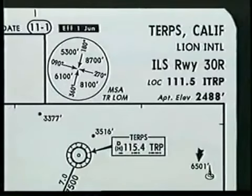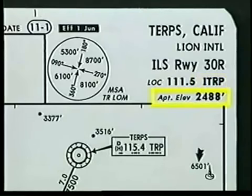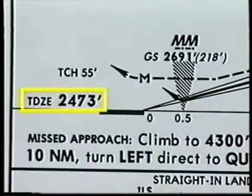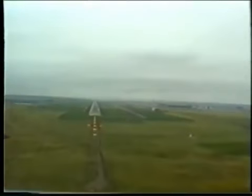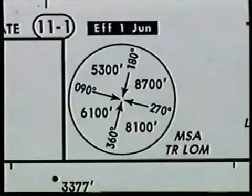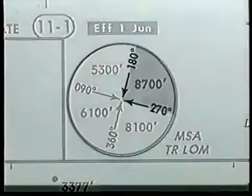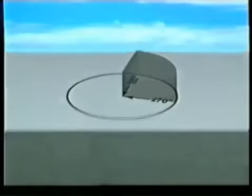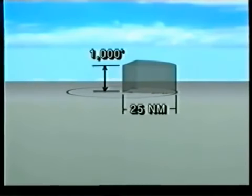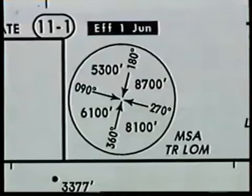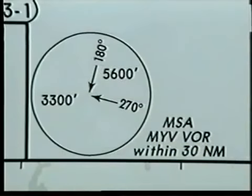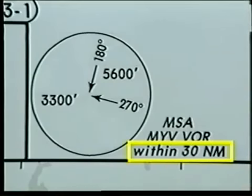This section of the chart also includes the procedure's primary navigation aid and frequency along with the identifier. Below this is the airport elevation, which is the highest usable landing surface on the airport. In contrast, the touchdown zone elevation is the highest elevation within the first 3,000 feet of the landing surface. To the left of the airport information is a small circle which shows the minimum safe altitudes, or MSAs, for the approach.